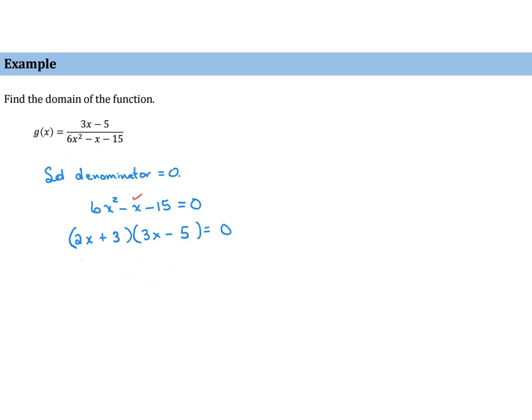So now, that means that we have 2x plus 3 equals 0 or 3x minus 5 equals 0. So that means x equals negative 3 halves or x equals 5 thirds.